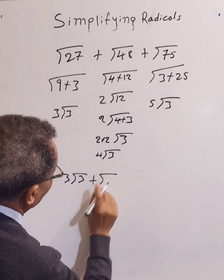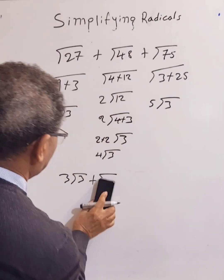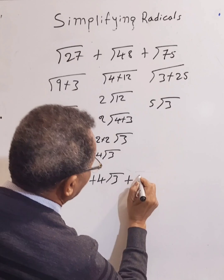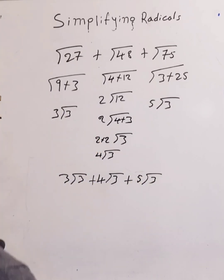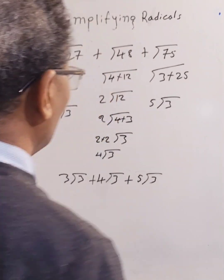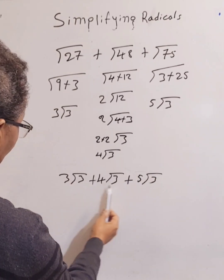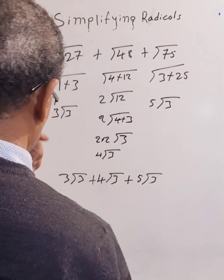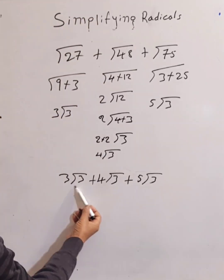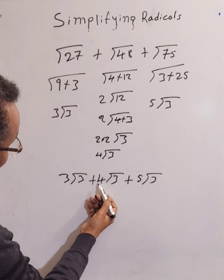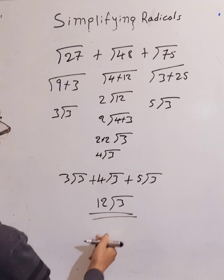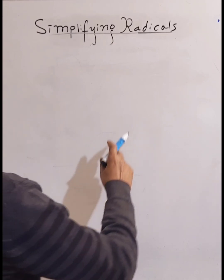So we have 3 plus 4 plus 5. Since all terms have the same radical with the same index, we can add the coefficients. We can't add a cube root and a square root, but here they're all square roots, so 3 plus 4 is 7, plus 5 is 12. The final answer is 12 root 3.